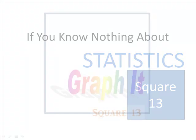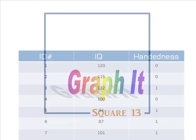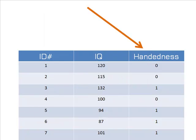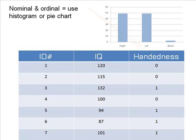At square 13, you take a close look at your variables. But let's do it with pictures. Let's start with handedness. Since this is a categorical, nominal variable, the best graph we could make of it is a histogram or pie chart.